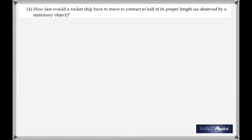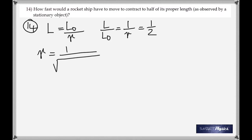And 14, how fast would a rocket ship have to move to contract to half of its proper length as observed by a stationary object? Length contraction. The contraction is given as one half of its proper length. And once you set up that equation, you get gamma as 2 from there, so set up equal to 2 and find the velocity.